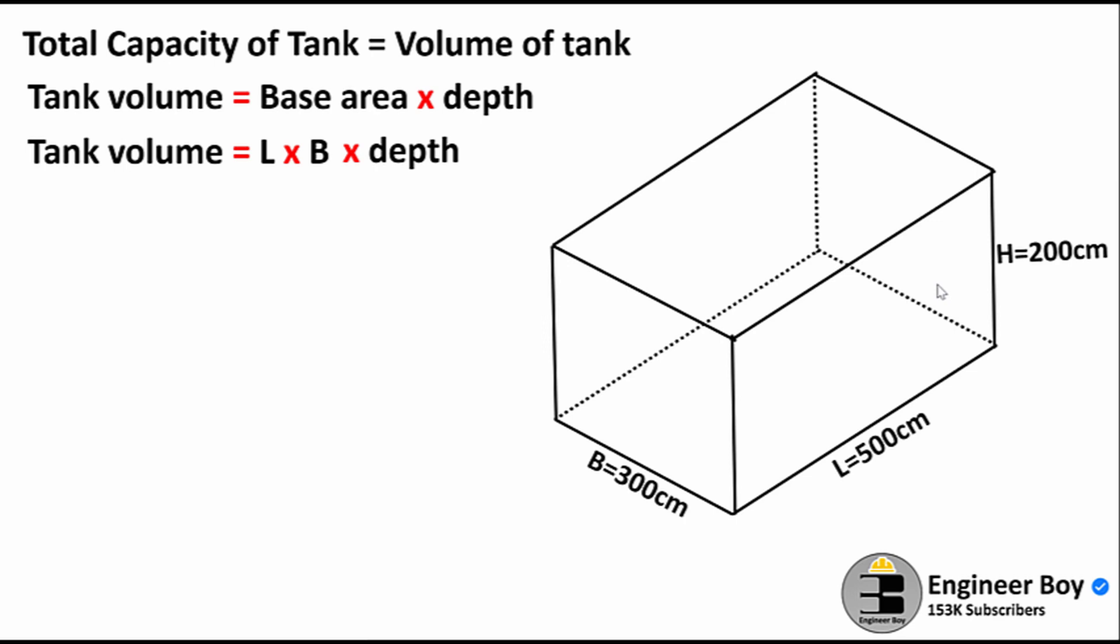Just plug in the values. The length is 500 centimeters or 5 meters, the breadth is 300 centimeters or 3 meters, and the depth is 2 meters. Multiply these three things to get the tank volume or capacity, which is 30 cubic meters.